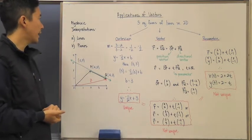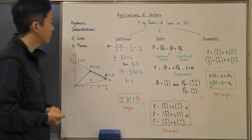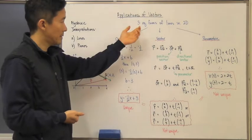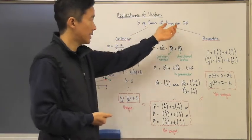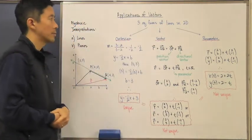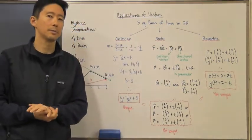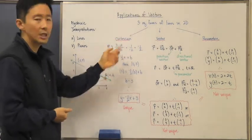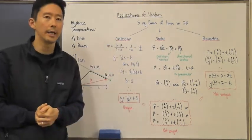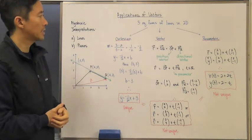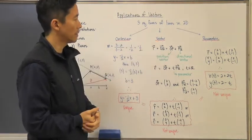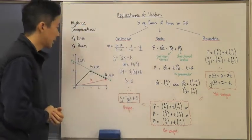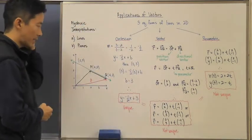We can actually use vectors to come up with an algebraic interpretation of planes, but we're going to first start off with lines and take a look at how we can algebraically interpret lines using vectors. When it comes to lines in two dimensions there are really three equational forms: the Cartesian form, the vector form, and the parametric form.